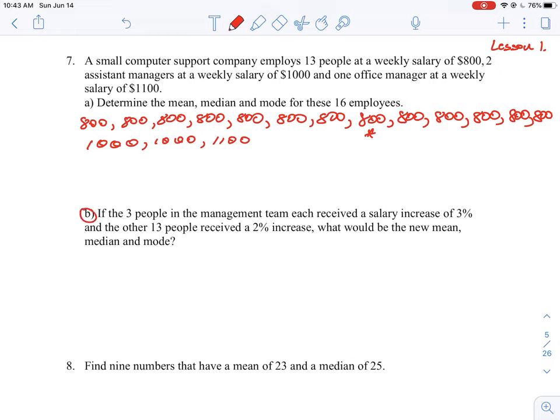So if we look at question B now, if three people in the management team each received a salary increase of 3%, and the other 13 people increased in 2%, what would be the new mean, median, and mode? Okay, so first we have to understand how do we do a 3% increase?